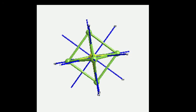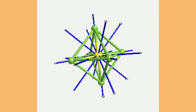In the top view of this molecule, you can see how the midpoints of opposite edges define the 6 C2 axes. In the side view, you can also see the C2 axes passing through opposite edge midpoints. There are 6 C2 axes in total, each passing through the midpoint of one pair of opposite edges.